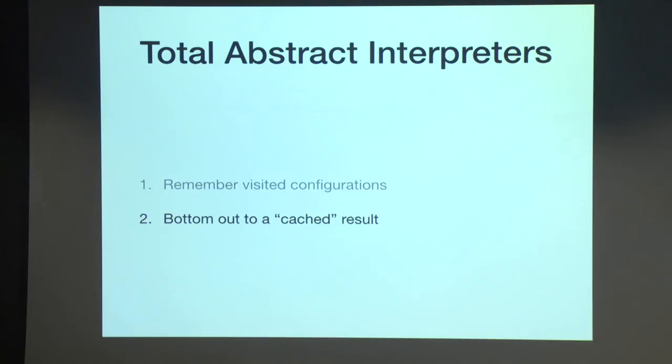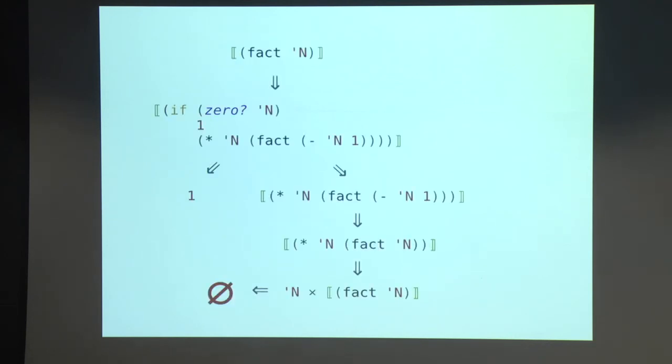And so one of the lessons from this paper is that you need more work to do loop detection in an abstract setting. What you think is sound for a concrete interpreter may not actually be sound for an abstract interpreter. So the second insight to the algorithm we described in the paper is that you need to bottom out to some cached result. You can't just return empty set. We need something there that gets returned.